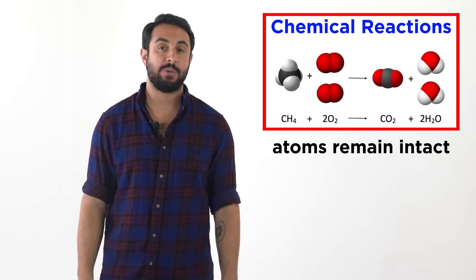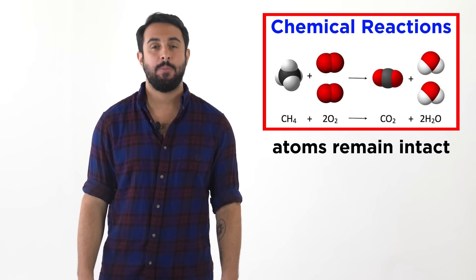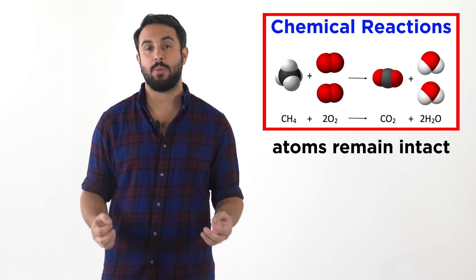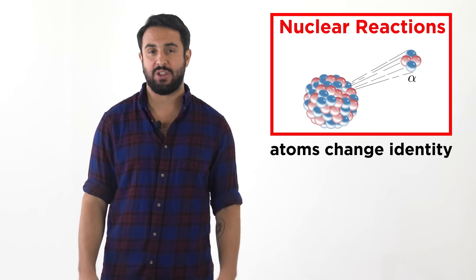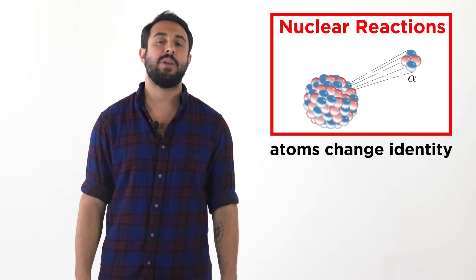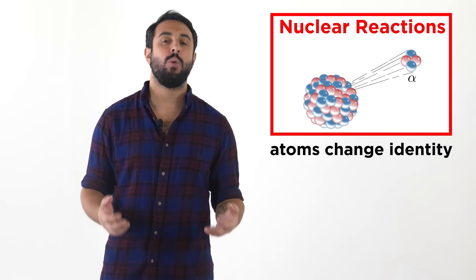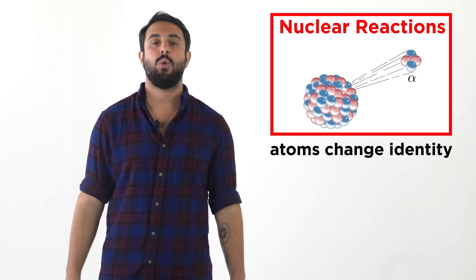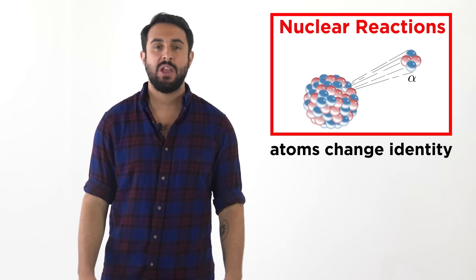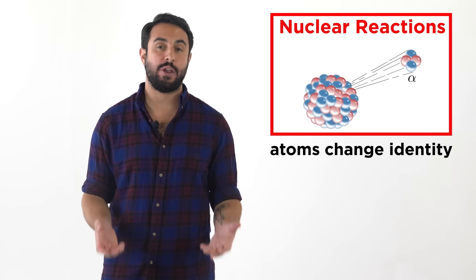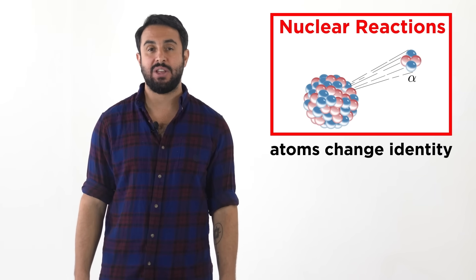Chemical bonds break and form to generate new substances, but the identity of each atom remains intact. However, there are reactions that do alter the identity of an atom. This is because changes are occurring within the nucleus of an atom, which produce one or more nuclides that are different from the reacting nuclides. These are referred to as nuclear reactions. Let's learn about these now.